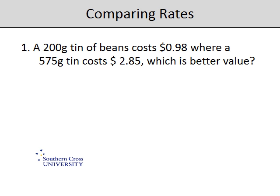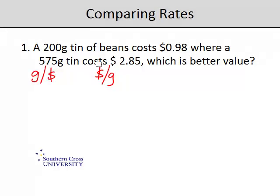In this video we'll be working out which is the better value by comparing rates. In the first question we're talking about different size tins of beans and their costs to work out which is better value. The first question is whether we use grams per dollar or dollars per gram. Grams per dollar is better because we're going to get a nicer answer — the 200 gram tin is pretty much about a dollar, so that's fairly close to 200 grams per dollar. So let's go with grams per dollar.